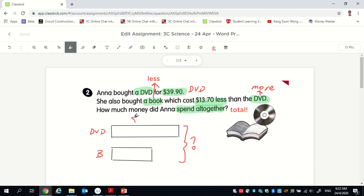So let's figure out the numbers. I bought a DVD. This is $39.90. This whole thing. I bought a book that cost $13.70 less. So this is my $13.70 less. So you realize that the book costs $13.70 less, which is this, which you probably need to find. And then once you know the book, once you know the DVD, I'm sure you know how to find the total.